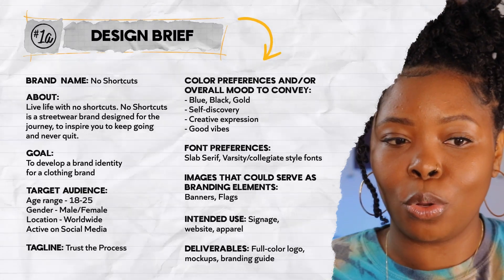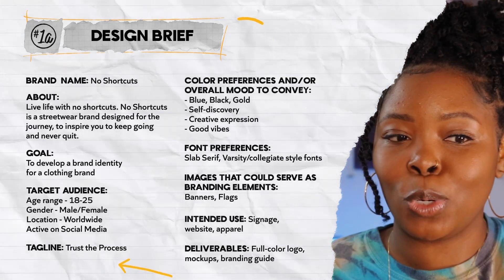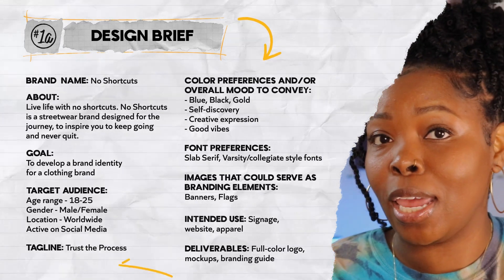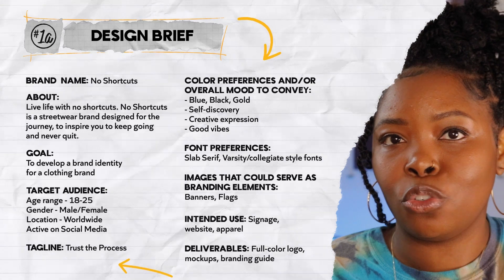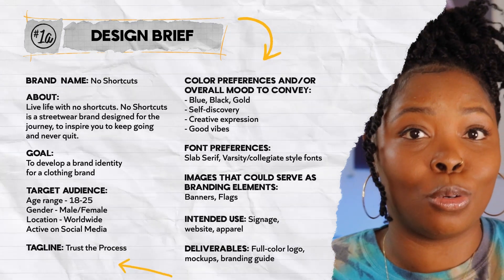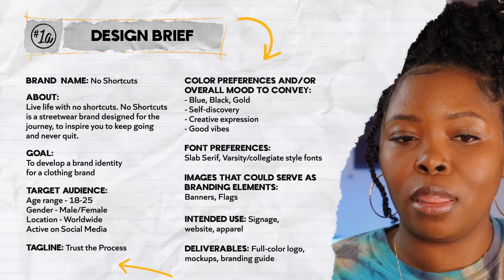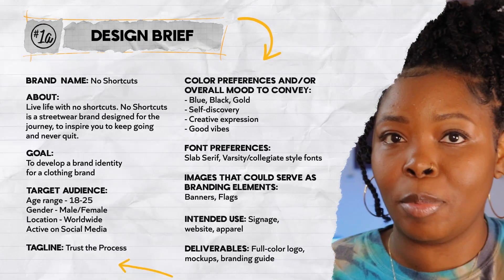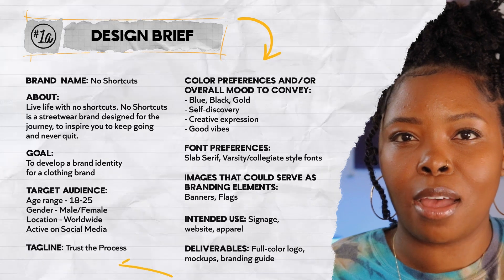First, we're going to start with our brief. The brand is called No Shortcuts — they're about living life with absolutely no shortcuts. It's a streetwear brand designed for the journey, to inspire you to keep going and never quit. The target audience is 18 to 25 year olds, both male and female, very active on social media. The tagline is 'trust the process,' color preferences are blue, black, and gold, the mood is self-discovery and creative expression, and font preferences are varsity collegiate style and slab fonts.